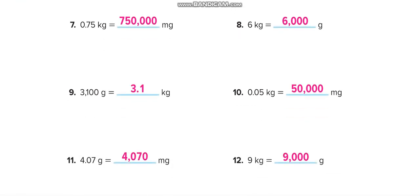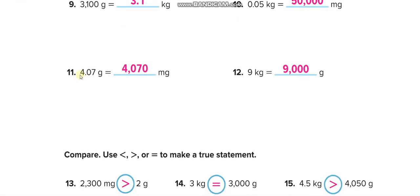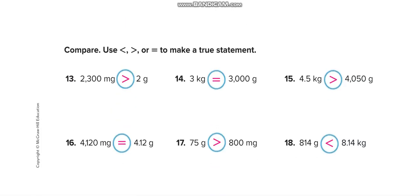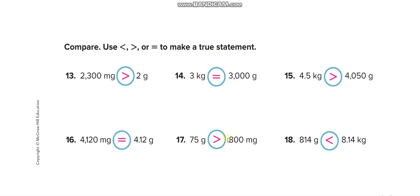Convert 4.07 grams to milligrams: multiply by 1000, moving the decimal three places to the right — 4.07 becomes 4070 milligrams. 9 kilograms times 1000 equals 9000 grams. Try the remaining exercises and check your answers from the book.